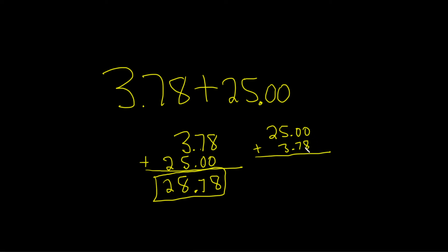So it doesn't matter how you add these numbers. We do it this way. It's the same. Watch. 0 plus 8 is 8. 0 plus 7 is 7. Bring down the decimal. 5 plus 3 is 8. Then bring down the 2. 28.78. I hope this video has been helpful.